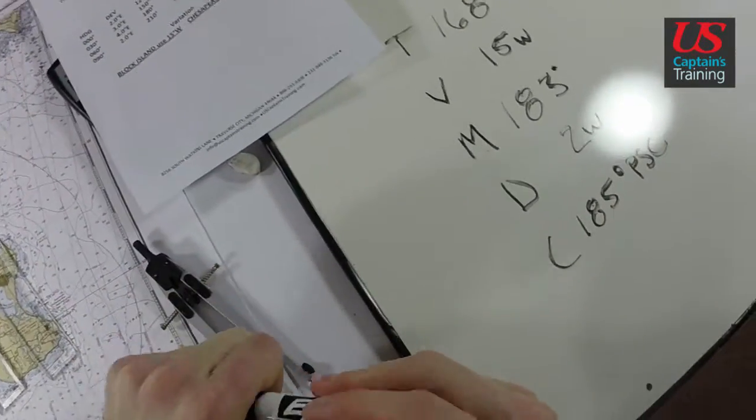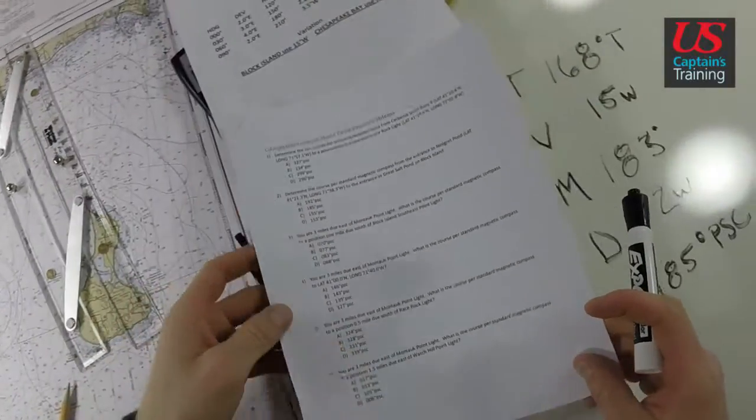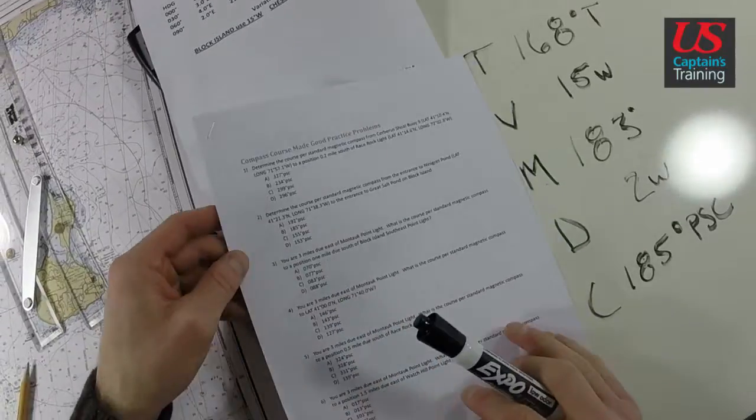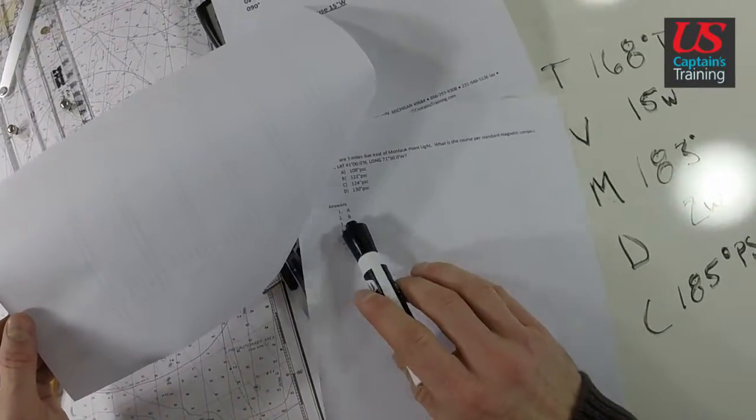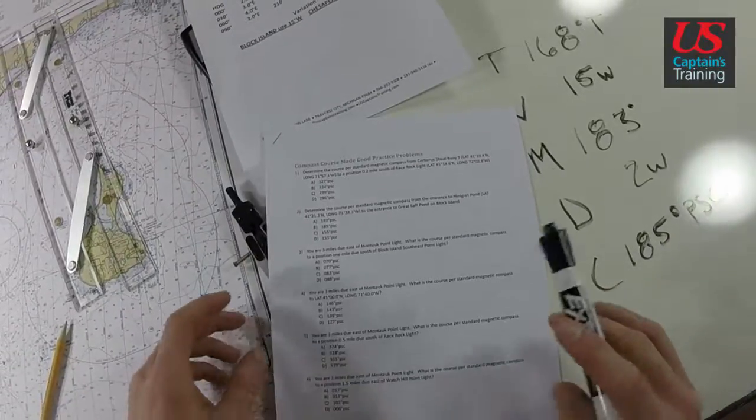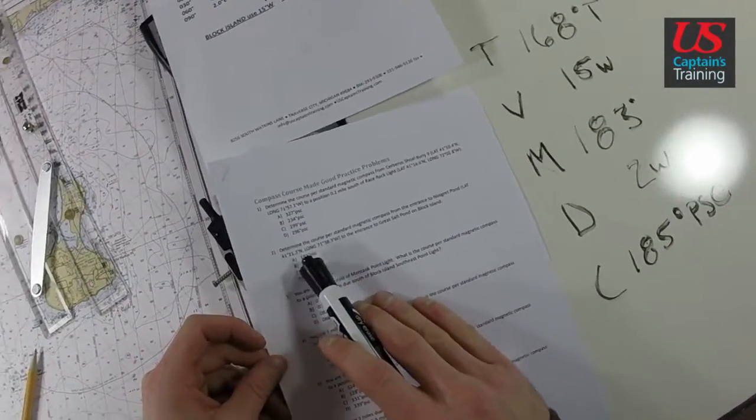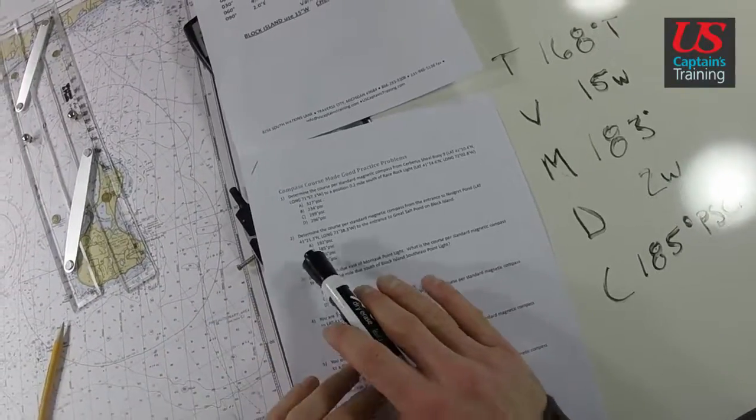185 - what does it say? Number 2, here we are: 185 PSC. Let's double check to be sure. So the answer to compass course made good practice problem 2 is 185 PSC B.